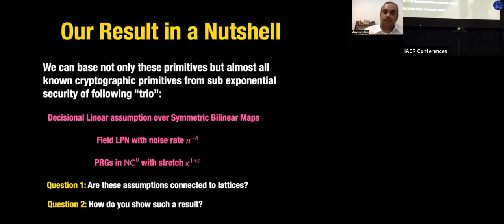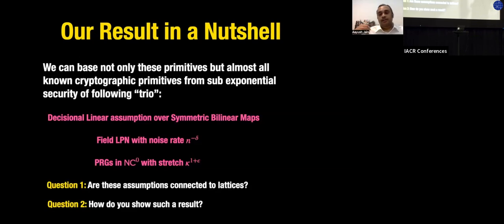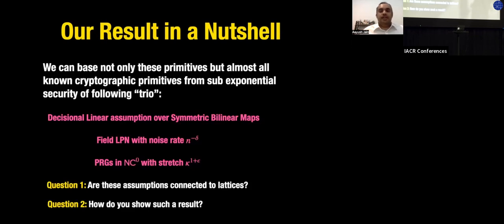The third assumption is the existence of Boolean PRGs implementable in constant depth (NC0) that expand κ bits to κ^{1+ε} bits for any ε > 0. We need sub-exponential security for all three assumptions, meaning for every polynomial-time attacker, the distinguishing probability in these assumptions is bounded by some sub-exponential quantity.